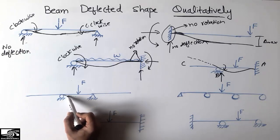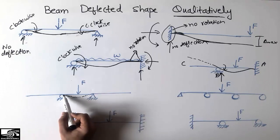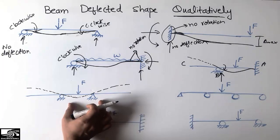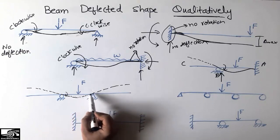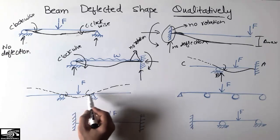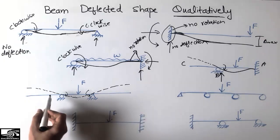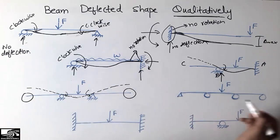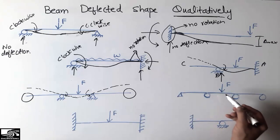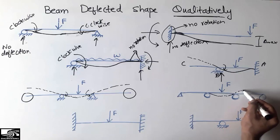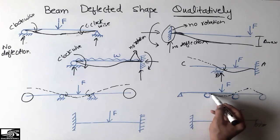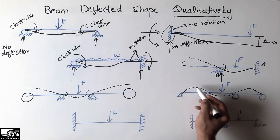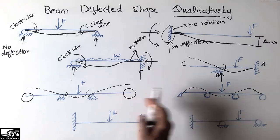For the next beam configuration, due to the support the deflection comes to zero, and then where there is no load it will follow this upward path. There will be rotation again due to no resistance to moment from the hinge and roller supports. The beam will follow this path because there is no support at those free locations to resist the deflected shape.